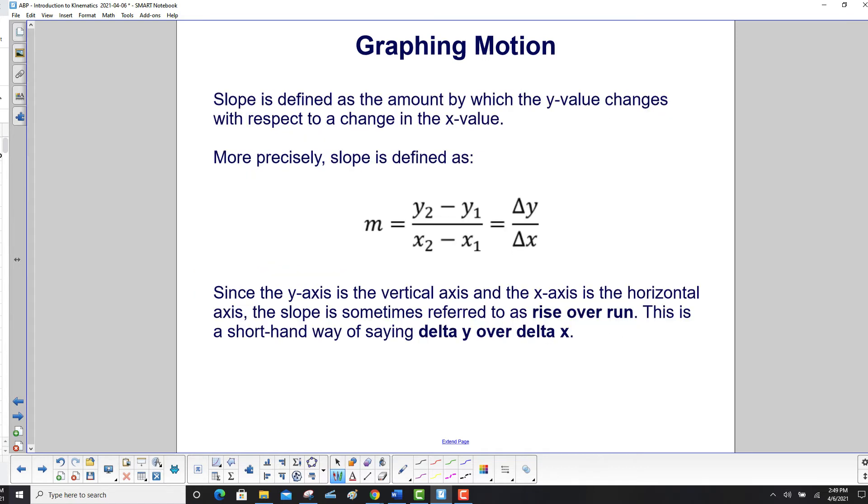Slope on a graphed line is defined as the amount by which the y value changes with respect to a change in the x value. More precisely, slope, and we use the lowercase m to represent slope, equals y2 minus y1 over x2 minus x1 or delta y over delta x. Since the y-axis is the vertical axis and the x-axis is the horizontal axis, the slope is sometimes referred to as rise over run. This is a shorthand way of saying delta y over delta x.